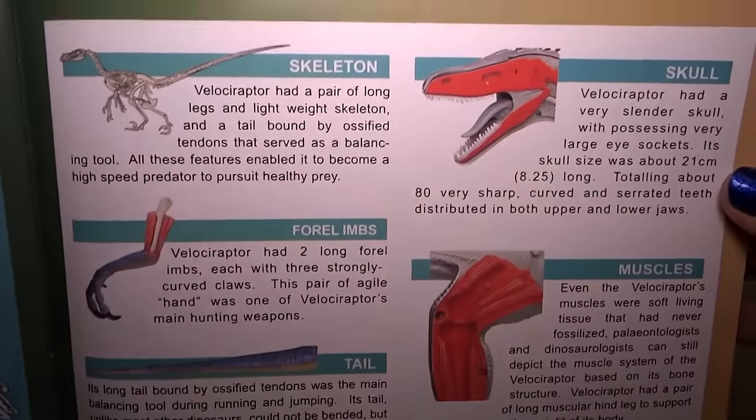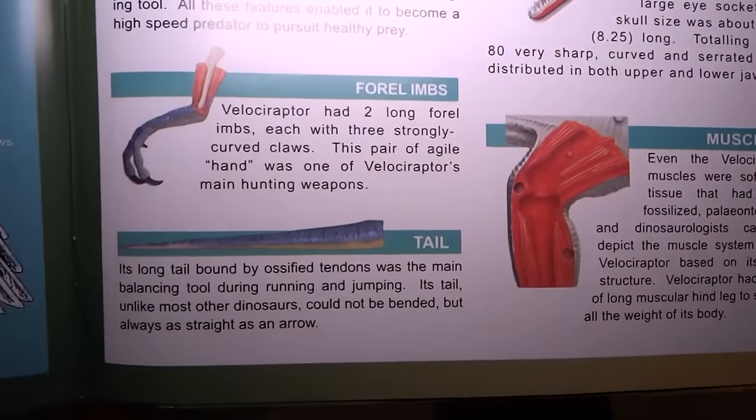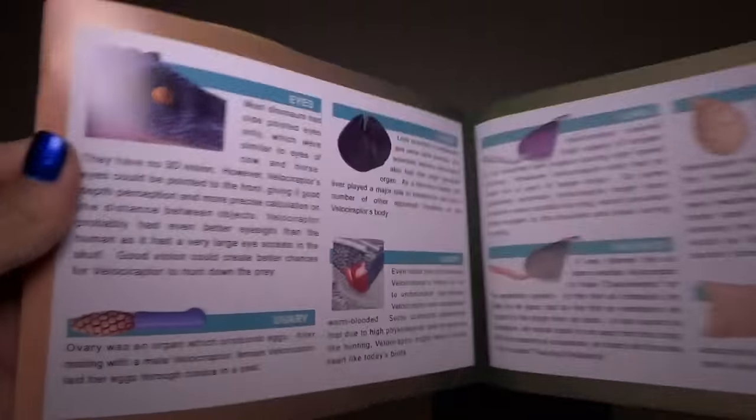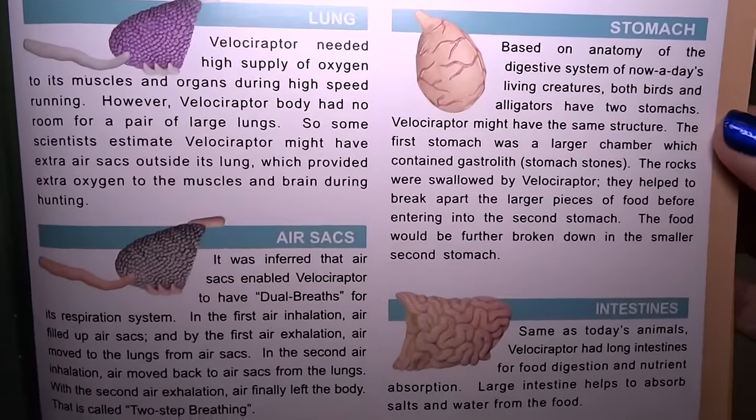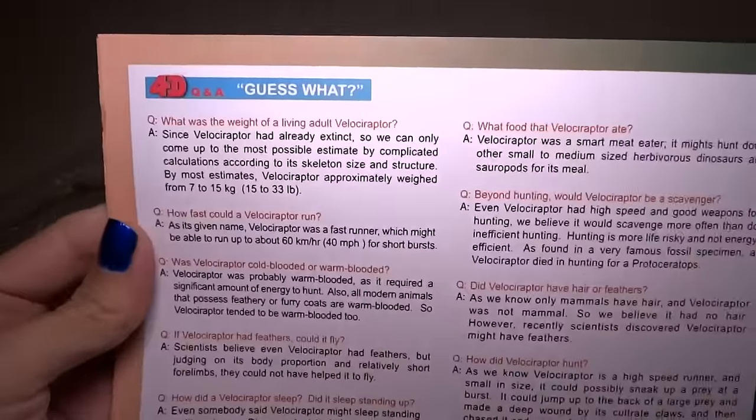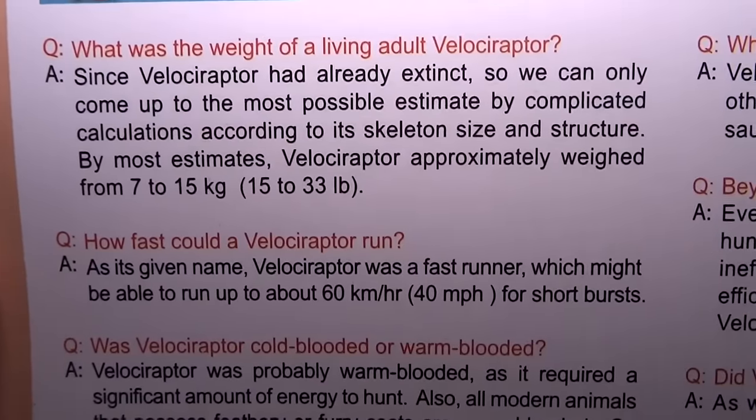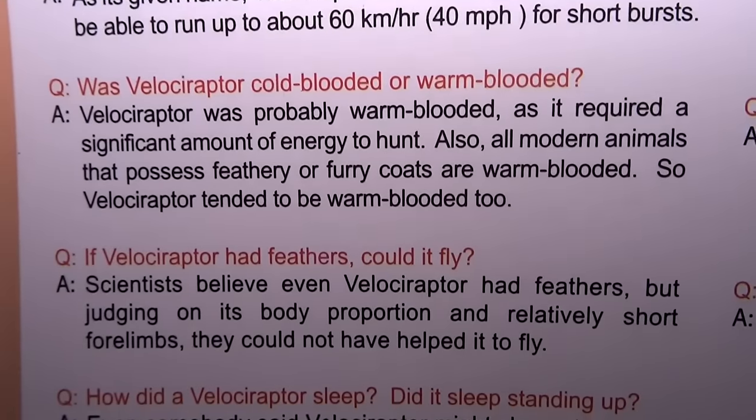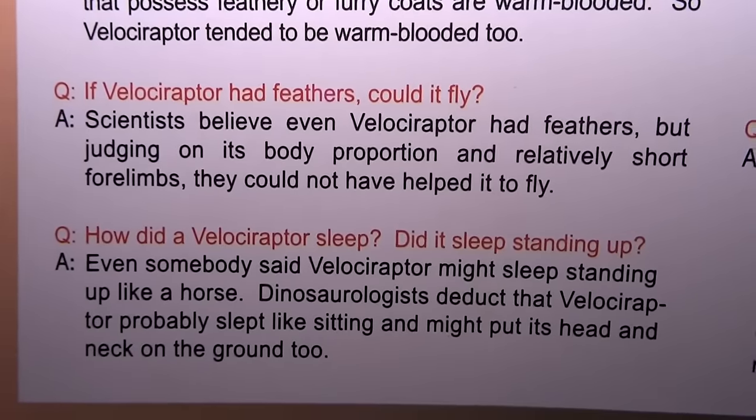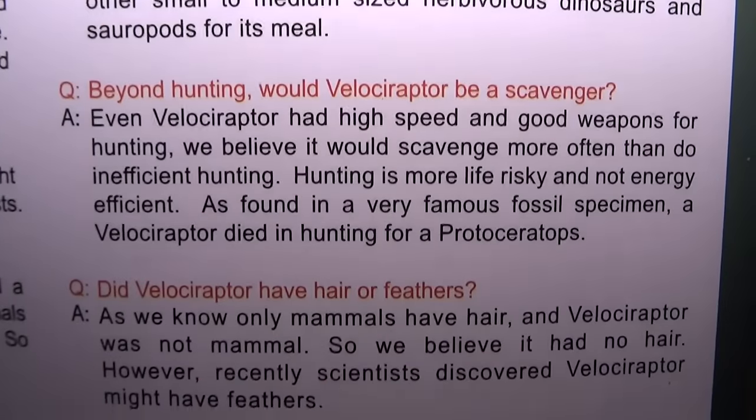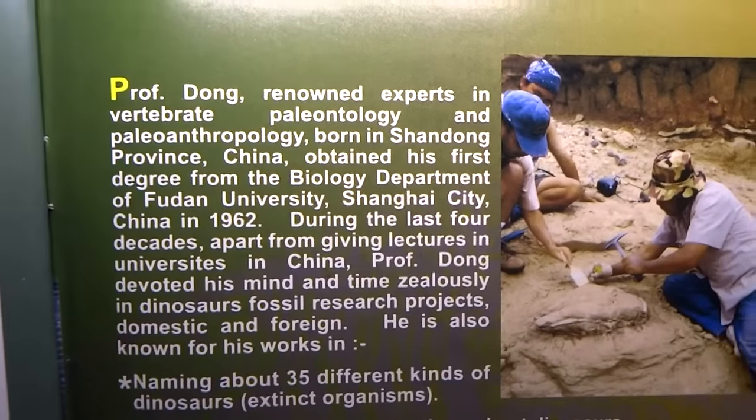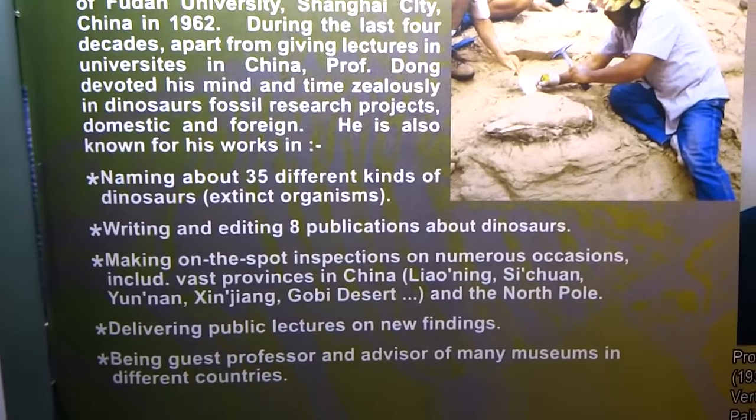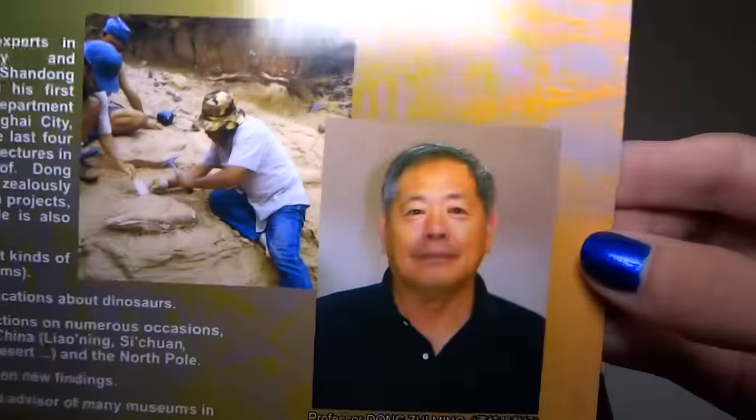Some stuff about skeleton, skull, forelimbs, muscles, and tail. And eyes. Liver, heart, ovary. Lung, stomach, air sacs, intestines. And here's some questions. It's a lot of stuff to read. If you want a question and answer session for yourself or your friends, you can just read it like that. And here's something about the professor that is helping with this model.